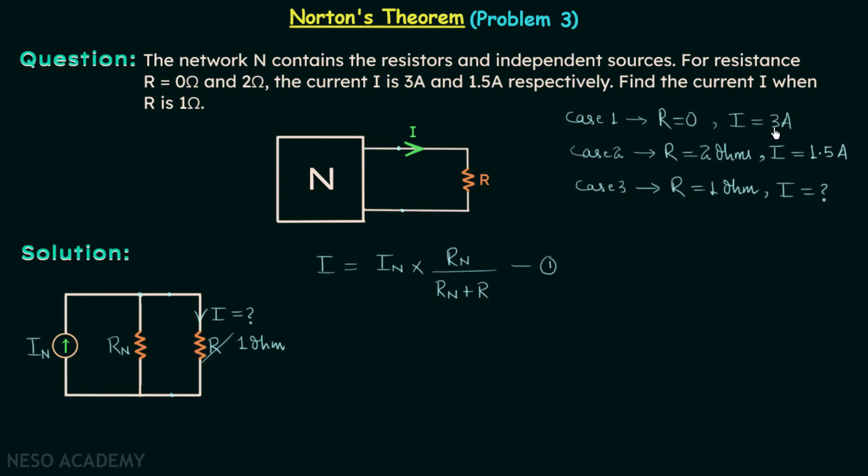Now focus on case 1. R is equal to 0, I is equal to 3 amperes. We will have 3 equal to In multiplied by Rn divided by Rn, because Rn plus 0 will be Rn. From here we are getting current In, which is the Norton's equivalent current, equal to 3 amperes.